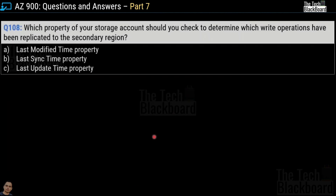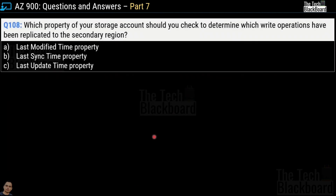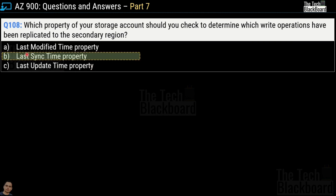Question number 108: Which property of your storage account should you check to determine which write operations have been replicated to the secondary region? Options are last modified time property, last sync time property, or last update time property. The correct answer is option B — last sync time property.